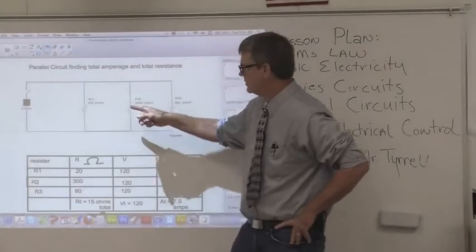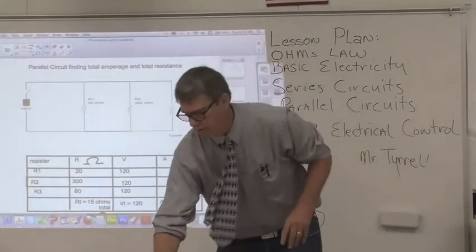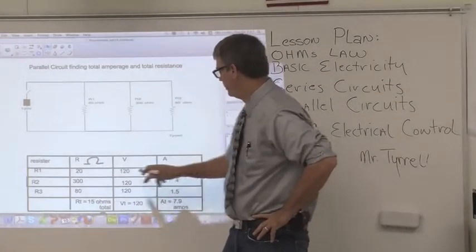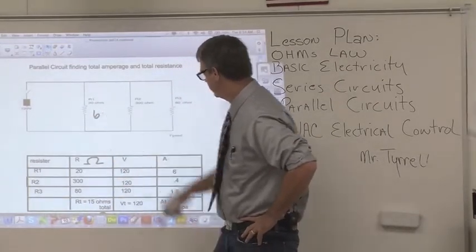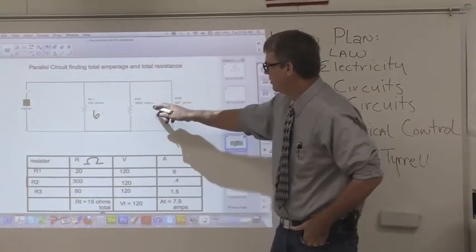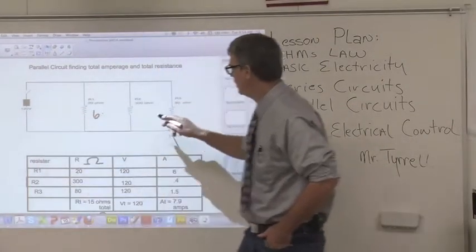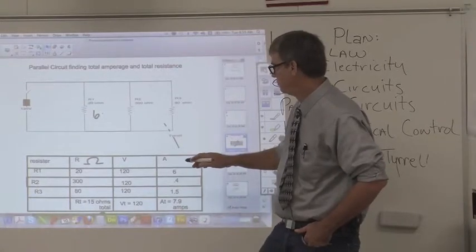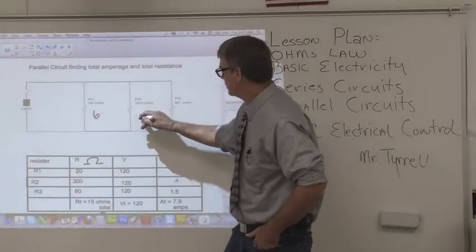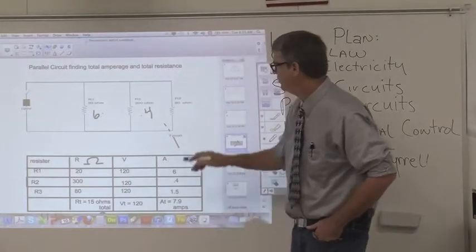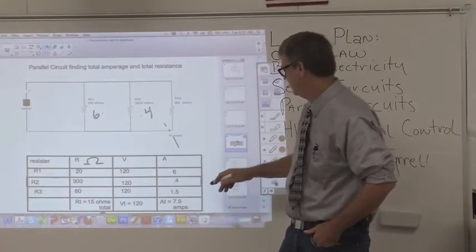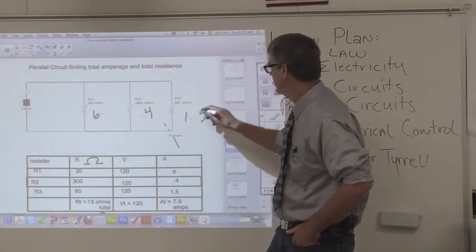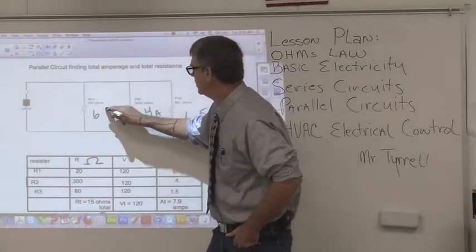If we know what the voltage is and what the resistance is, let's go ahead and do this. We have 120, and if we divide it by 20, we're going to have 6 amps. If we have a 300 ohm resistor in parallel, we divide 120 by 300, and that's going to be 0.4 amps. And if we have an 80 ohm resistor, 120 divided by 80 is 1.5 amps. So this is our amperage. That was easy.